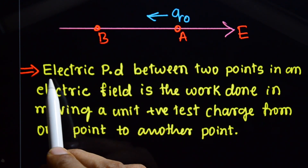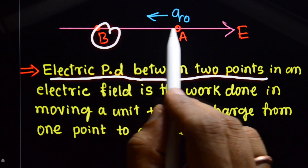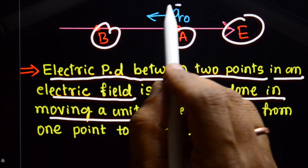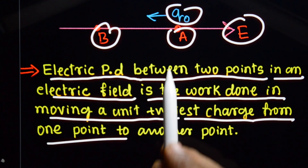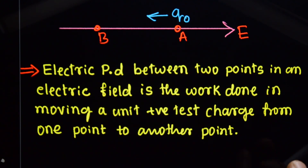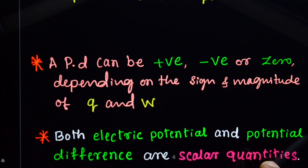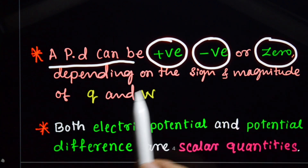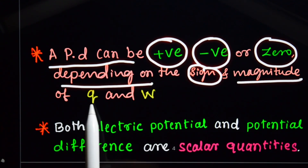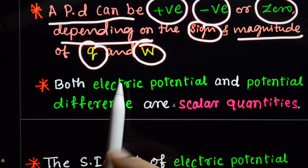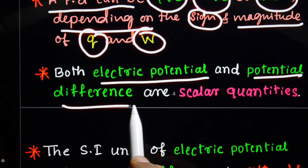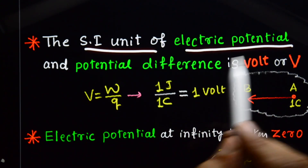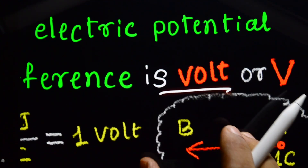Electric potential difference between two points in an electric field is the work done in moving a unit positive test charge from one point to another point. Regarding electric potential and potential difference: the potential difference can be positive, negative, or zero, depending on the sign and magnitude of the charge and the work done. Electric potential and potential difference are scalar quantities — only magnitude, no direction.